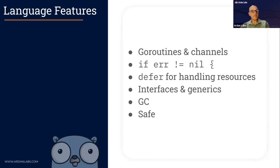If you want fancier error handling, Go now has chaining of errors — you can check for types of errors and do more fine-grained error handling. This is all possible, but most of the time you're just going to check for errors, and that is good.